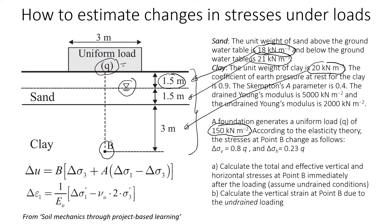When we apply load q = 150 kN/m², there will be a change in vertical stress at point B equal to 0.8 times q, and a change in horizontal stress equal to 0.23 times q. The soil is saturated because the groundwater level is above the clay layer, so there will also be changes in pore pressure. To find the changes in pore pressure we're going to use Skempton's formula.